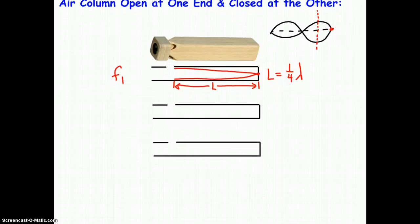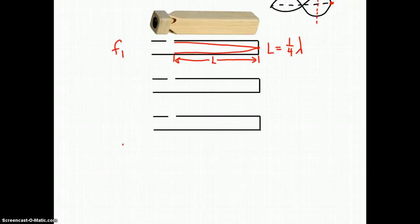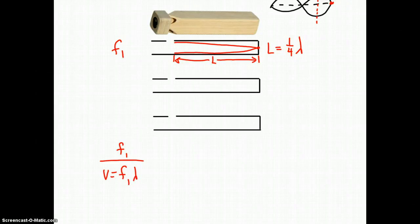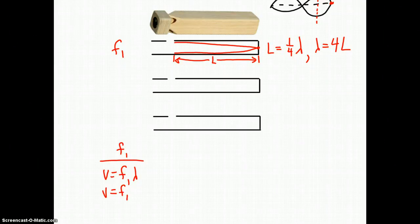So now let's look at the relationships among the wave variables at the fundamental frequency. We have V equals F1 lambda. The wavelength would be, in terms of L, four times L. We multiply both sides by four. So V equals F1 times 4L.